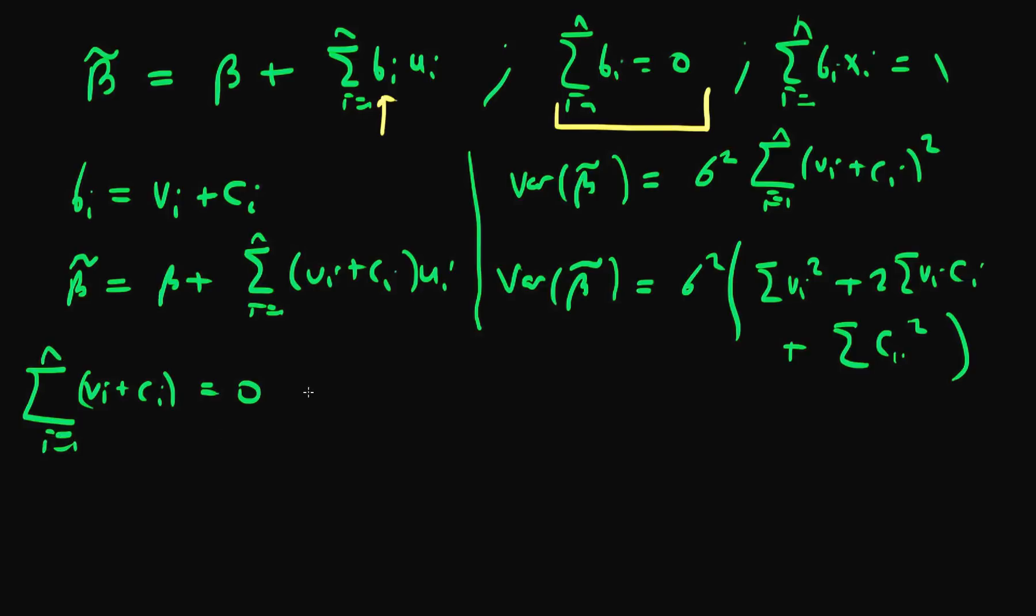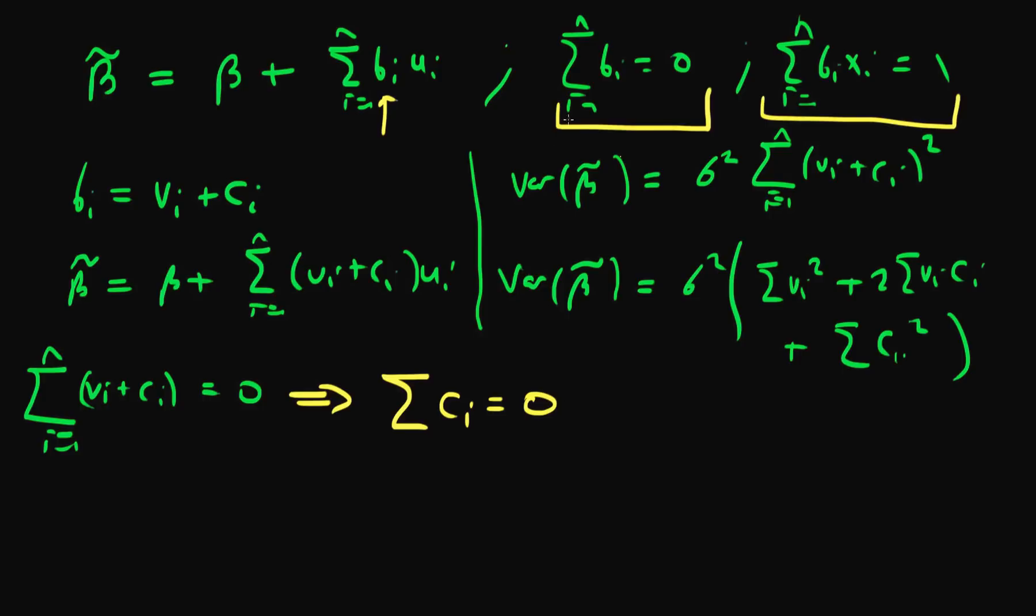We know from least squares that the sum of vi is actually equal to 0. So this implies that the sum of ci equals 0. Using our first condition that the sum of bi equals 0, we derive that the sum of ci equals 0.